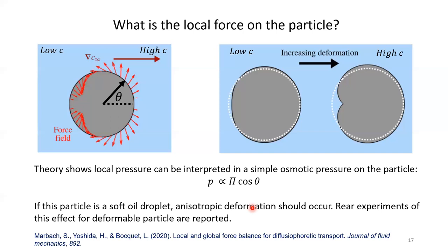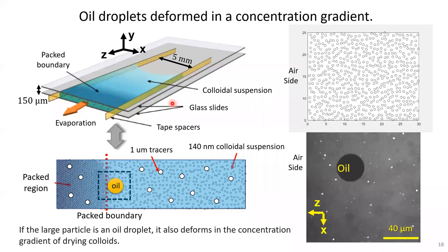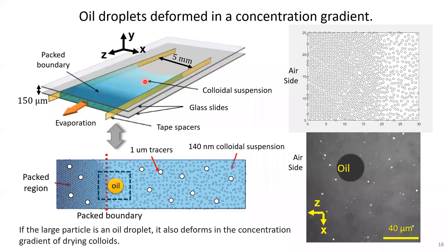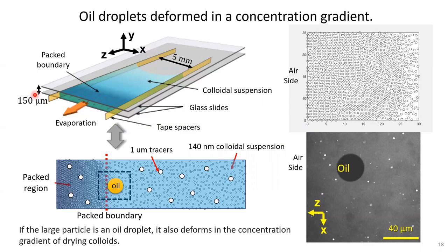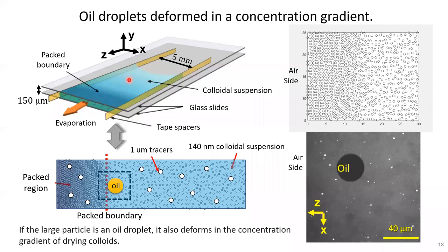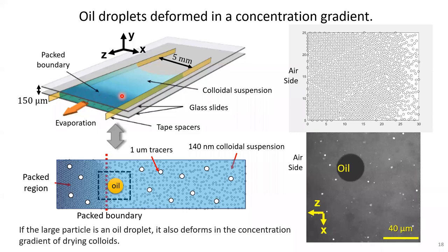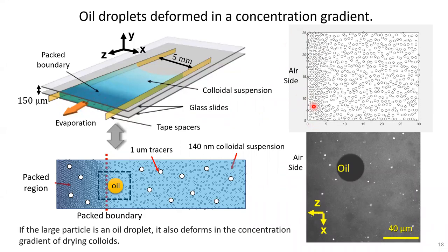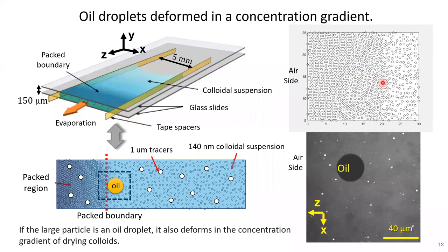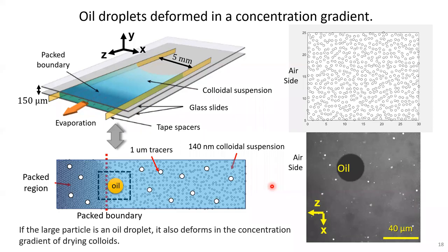To see deformation, we need a very soft particle. The soft particle we use is an oil droplet — the softest thing we can find. The experiment uses a drying channel made in the lab with two glass slides and a spacer to set the gap. We load the colloid suspension in the channel and it evaporates from the sides. During evaporation, water goes out causing flow, and particles flow with the water and pack at the air-water interface, creating a sharp concentration gradient. Zooming in, you can see oil droplets in that gradient experiencing forces.